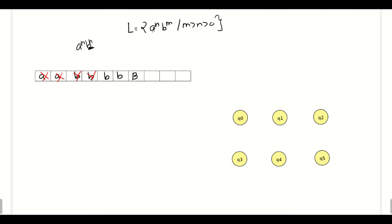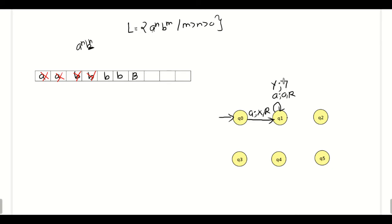Now let us start to design the Turing machine. We will start with the initial state q0. From state q0, if the input symbol is a, we will replace that a with x and move towards the right side. From state q1, if there are any a's, we will keep that a as it is and move towards the right side. There is also a chance that we may see some y from q1, so we will keep that y as it is and move towards the right side. From state q1, if we see the symbol b, we replace that b with y and the tape head will move towards the left side.